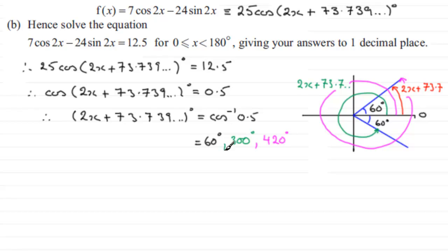So let's just put the 60 degrees in brackets. We're not going to use that one. So all I've got to do now is take 73.739 away from the 300 and the 420 degrees. And that's going to leave me with the 2x. So therefore, 2x is going to be the result of getting 300, take away this angle, 73.739, and that gives me 226.261 and so on degrees. And if I do 420 minus the 73 odd degrees, I get 346.261 and so on degrees.